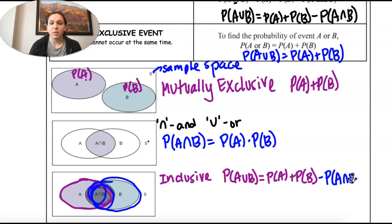The A and B. Because when we add these two we're taking the middle here and we're taking the middle here, and we only want the middle one time. So that is called Inclusive. And we add and then subtract the overlap.